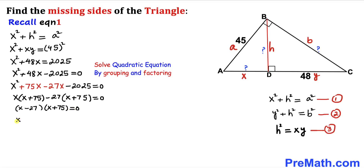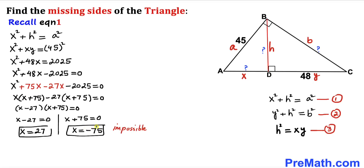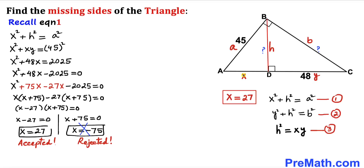Separating the factors: X − 27 = 0 gives X = 27, and X + 75 = 0 gives X = −75. Since X represents a side length, we reject the negative value. Therefore X = AD = 27 units.